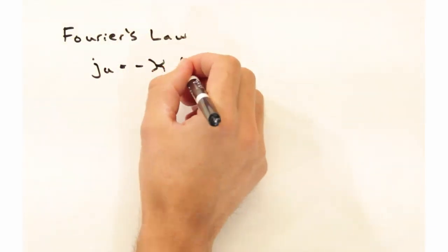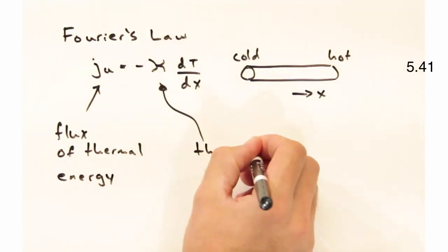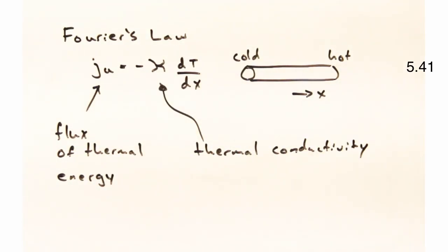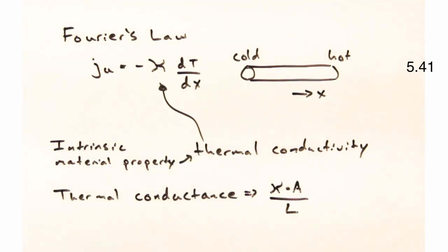Let's start today with Fourier's law, which relates a flux of thermal energy to a temperature gradient in terms of this material coefficient thermal conductivity. I want to emphasize that this is an intrinsic material property and isn't dependent upon the geometry of your sample. If you're thinking about the geometry of the sample, you should be thinking about thermal conductance.